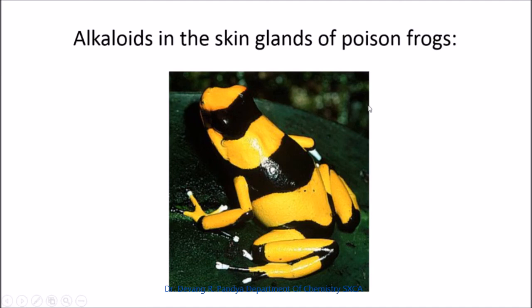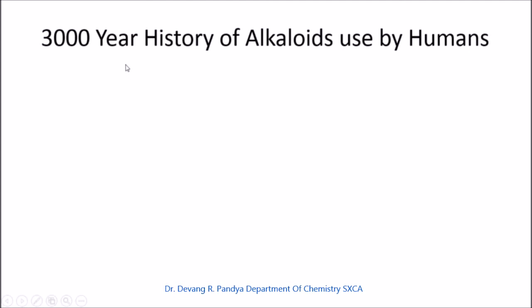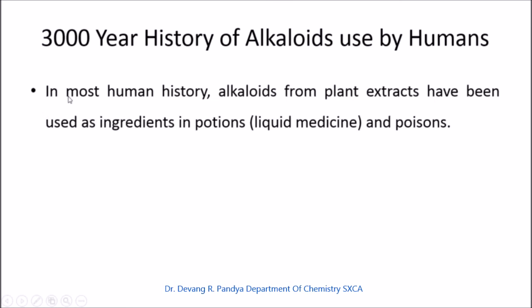The poison dart frog contains poisonous alkaloids on its skin. Alkaloids have a 300-year recorded history of use by humans, though since ancient times alkaloids from plant extracts have been used as ingredients in potions, liquid medicines, or poisons. Historical background helps us understand how this subject developed from its beginnings to its newest developments.